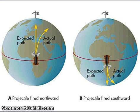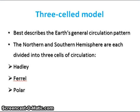The three-celled circulation now takes into account the Coriolis effect. The three-celled model best describes the Earth's general circulation pattern because it considers the Coriolis force due to the rotation of the Earth. In this circulation model, the northern and southern hemispheres are each divided into three cells of circulation, which are marked by the equator, 30 degrees north and south, and 60 degrees north and south. These cells are termed the Hadley, Ferrell, and Polar cells. Let's take a closer look at what this three-celled model entails.